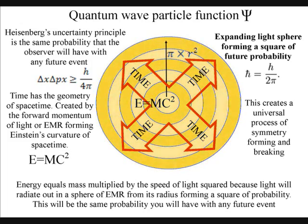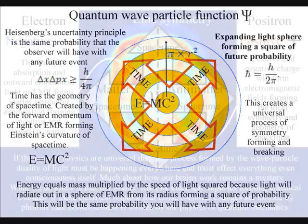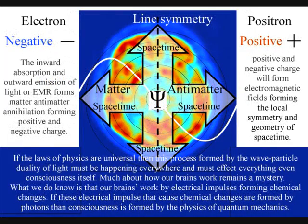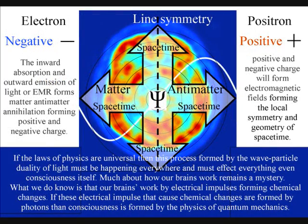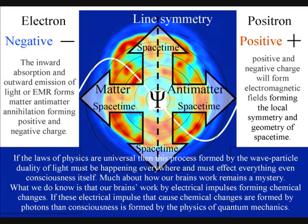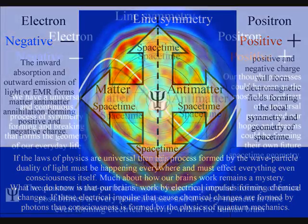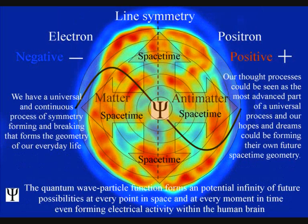Despite rapid progress, much about how the brain works remains a mystery, but what we do know is that our brains work by electrical impulses forming chemical changes. This electrical activity also forms electromagnetic fields. If these electrical impulses that cause chemical changes are formed by photons, then consciousness is formed by the physics of quantum mechanics.